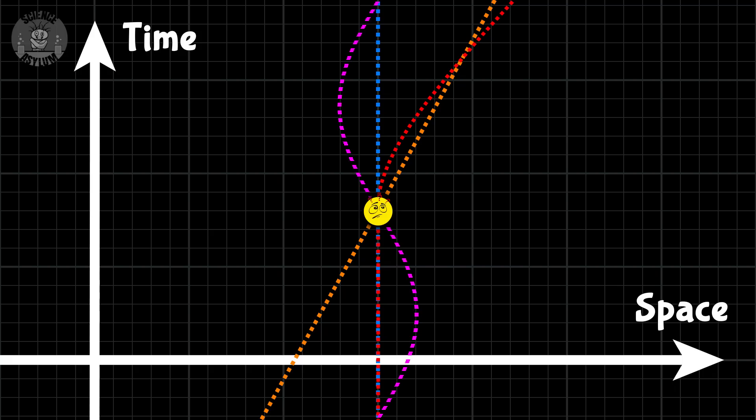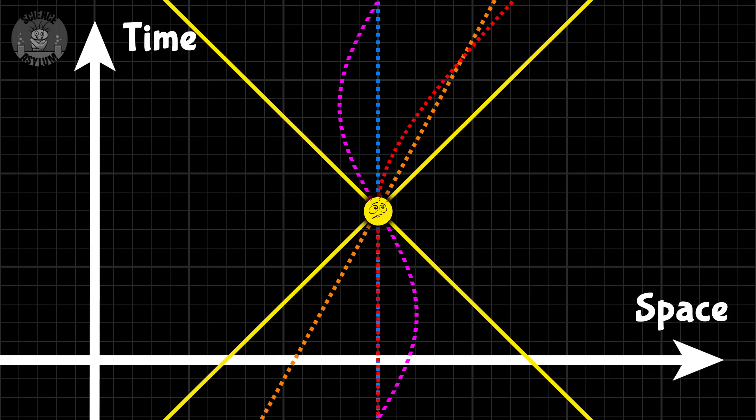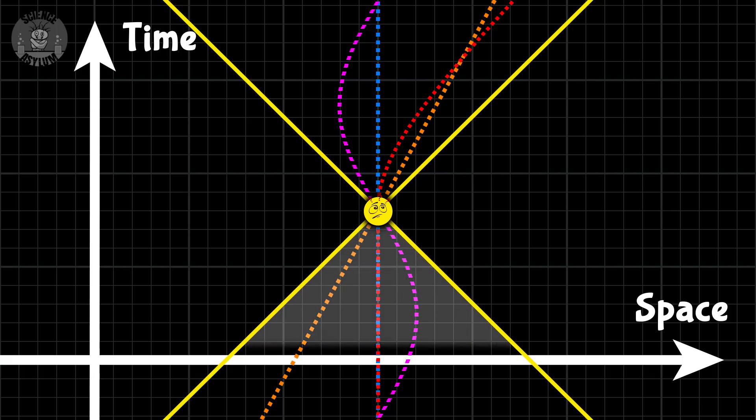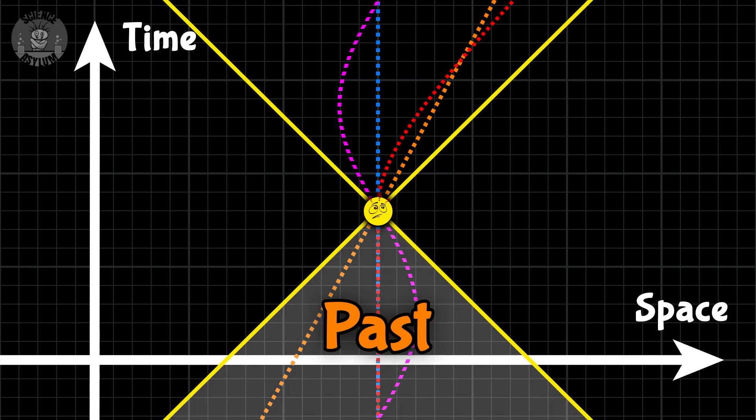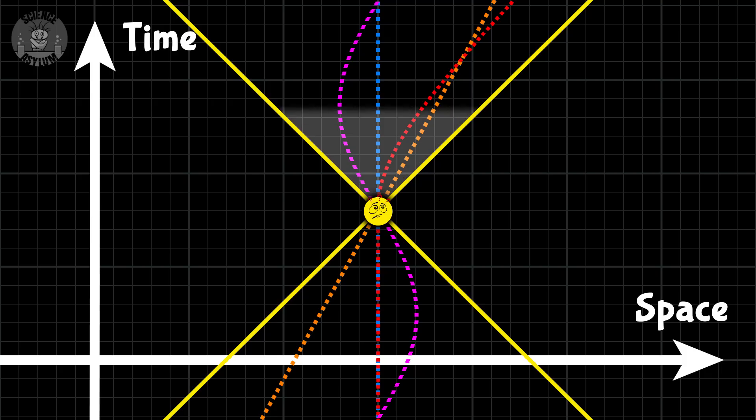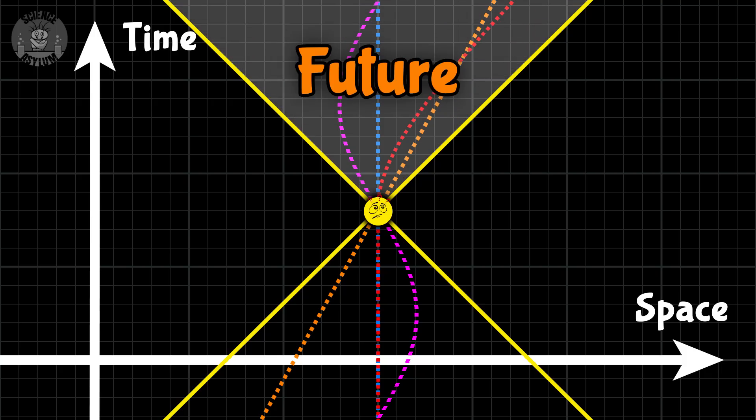Light travels along these diagonal paths, so your path is stuck inside those lines. This half happened before your present, it's your past. All the events that might have influenced you. This half will happen after your present, it's your future. All the events you might influence.